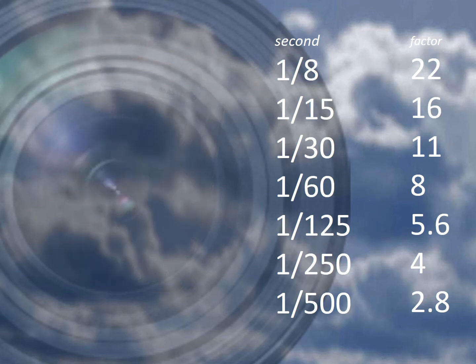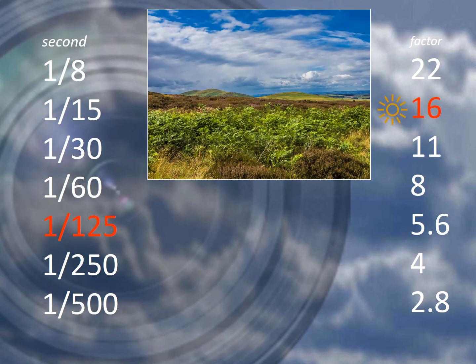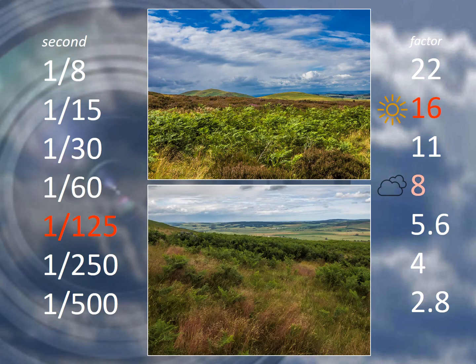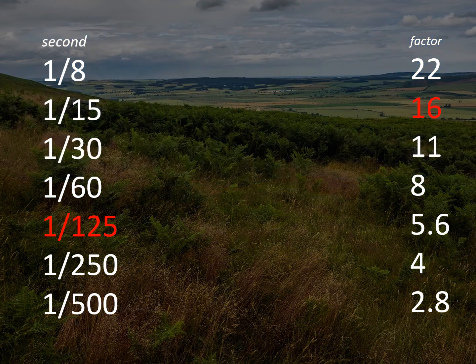This can be demonstrated with two similar landscape photographs: the first taken in bright sunlight, the second on a dull and cloudy day. Because the intensity of light on a dull day is less than the image taken in bright sunlight, the camera must increase exposure by either lengthening the shutter speed, or increasing the size of the aperture, or a combination of both. Otherwise, the photograph will look dark and underexposed.